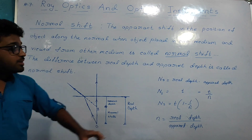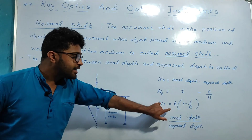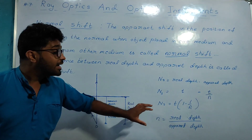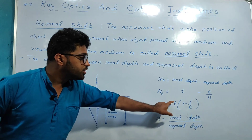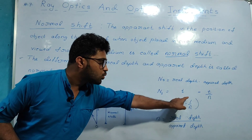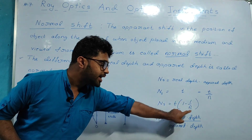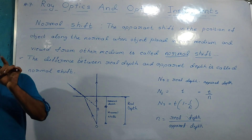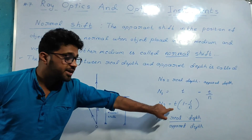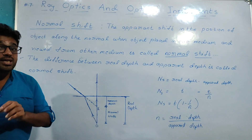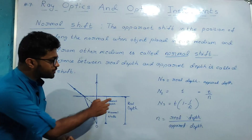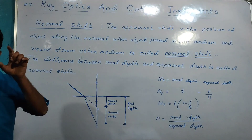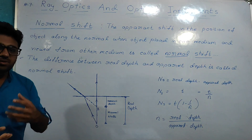The mathematical expression for normal shift is: ns equals t into (1 minus 1 divided by n). Here n is the refractive index and t is the real depth. Normal shift equals real depth into (1 minus 1 divided by n), where n is the refractive index of the medium.